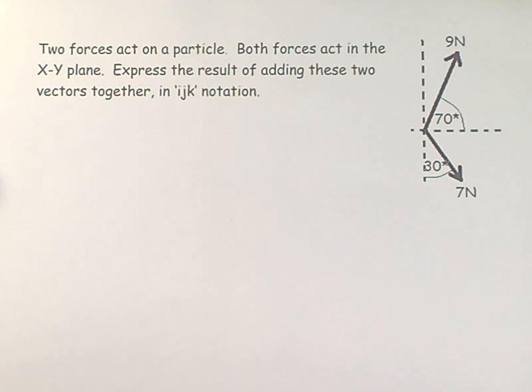This question says two forces act on a particle. Both forces act in the XY plane, so the sheet of paper is in the XY plane. Express the result of adding these two vectors together in IJK notation. We're given a 9 newton force at 70 degrees to the x-axis, and a 7 newton force at 30 degrees from the negative y-axis, and we need to express that in IJK notation.